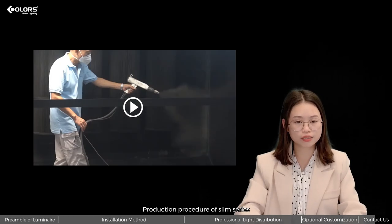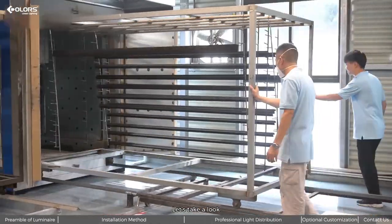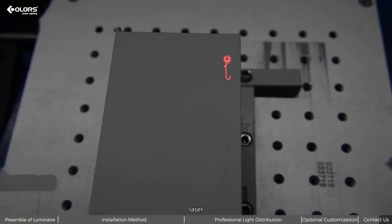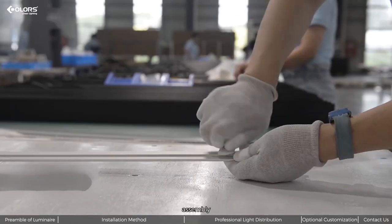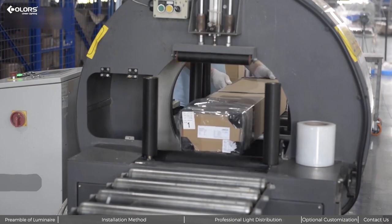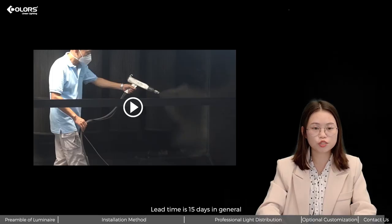Production procedures of Slim series include: straying, punching, cutting, drilling, laser, assembly, aging, and packaging. Lead time is 15 days in general, but for customized products, early order is better.